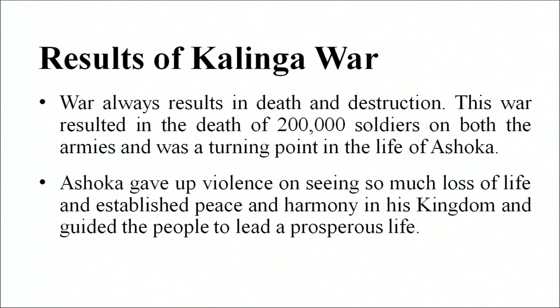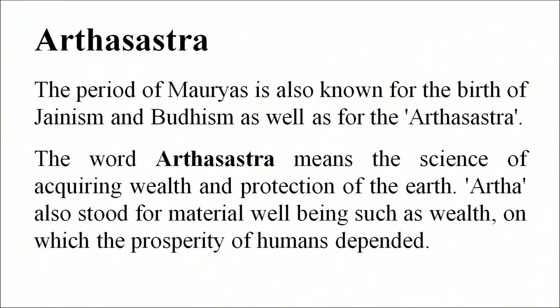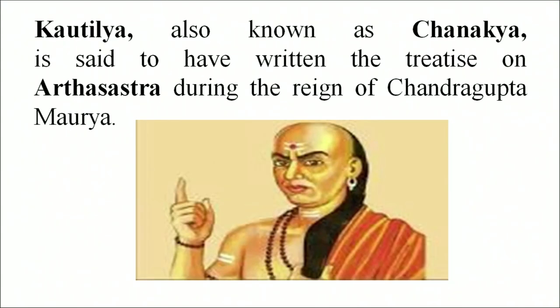He decided to follow the path of peace and harmony in his kingdom and guided the people to lead a prosperous life. In the period of the Mauryas, we also recognize this era as the birth of Jainism, Buddhism, and the Arthashastra. The word Arthashastra means the science of acquiring wealth and protection of the earth. 'Artha' also stood for material well-being such as wealth, on which the property and prosperity of human beings depended. Kautilya is said to have written the treatise of Arthashastra during the reign of Chandragupta Maurya.